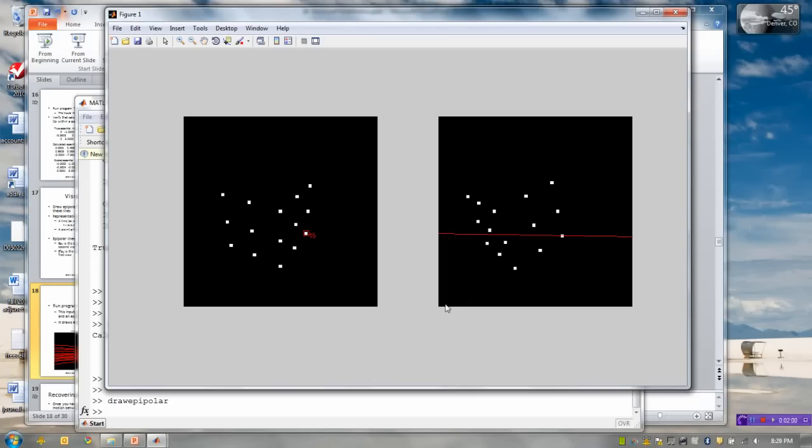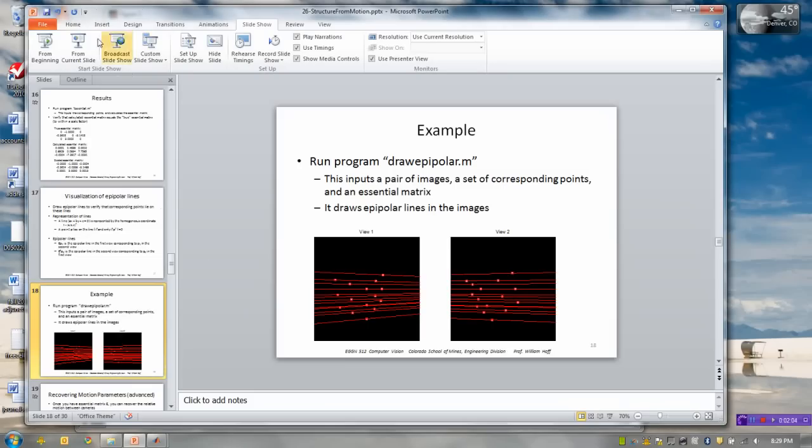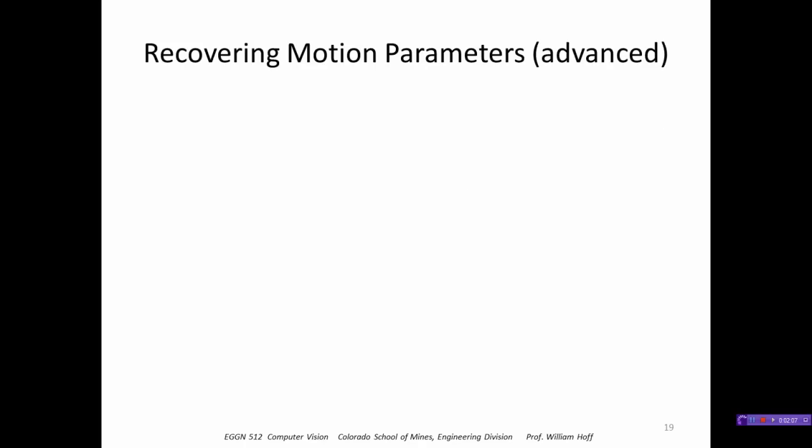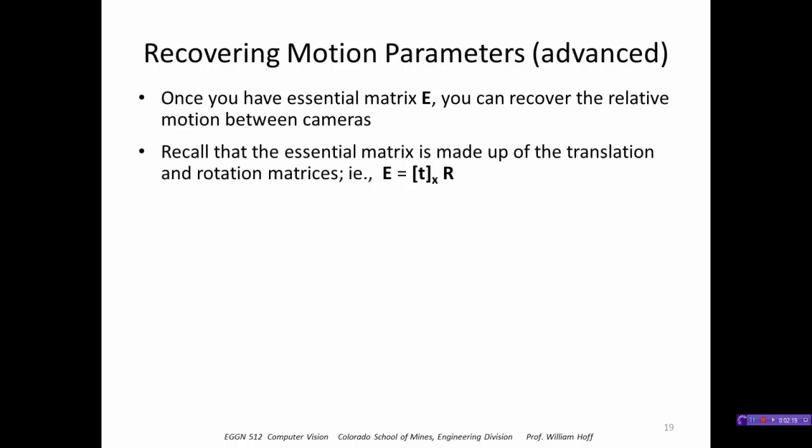We don't have any outliers in this case, well they're synthetic images so we wouldn't. Okay now this next section's a bit advanced mathematics, it's how to recover the translation and rotation given that we've calculated the essential matrix E. So recall that the essential matrix was made up of the translation and rotation in this form.